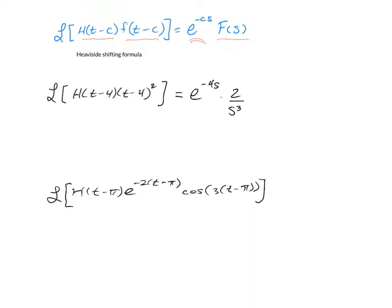For the next example, this one's a little trickier because we have both a Heaviside and an exponential and a trig function. The first thing we're going to do is make sure that we have t minus pi in all three places with t. Then we're going to have that exponential factor, e to the negative pi s, which captures that shifting.